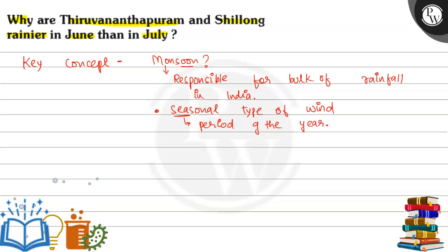The monsoon wind blows during a particular period of the year. This is why they are called a seasonal type of wind — because they change their direction with the season.